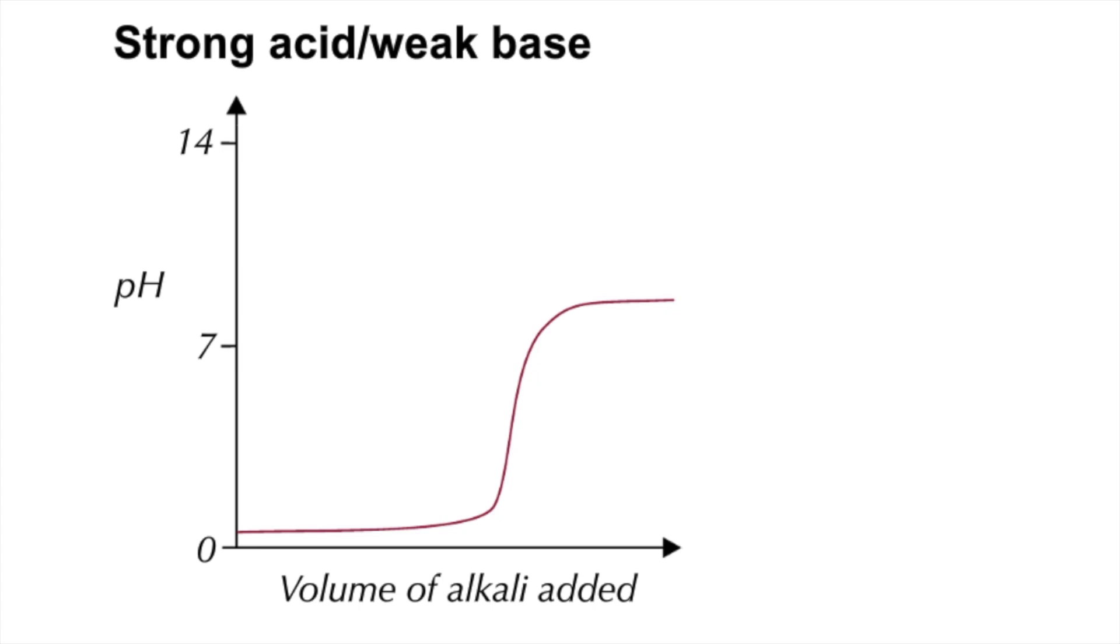The centre of the vertical section is now below 7. If we think about a typical reaction for strong acid-weak base, HCl plus aqueous ammonia represented as ammonium hydroxide, the ammonium ion in the salt is actually a weak acid because it can donate a proton to the water in the solution. So the pH at equivalence reflects that, and it's below 7.